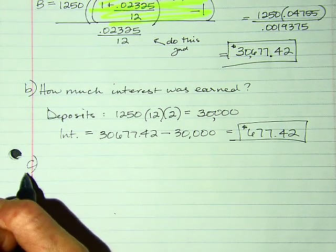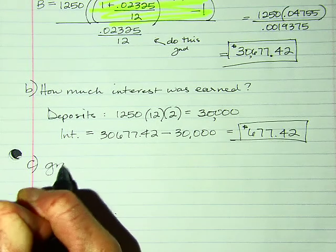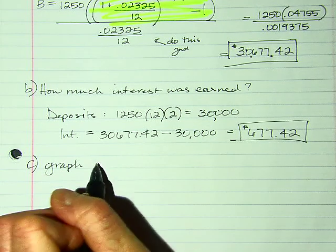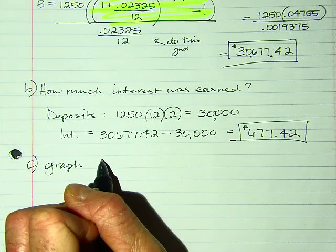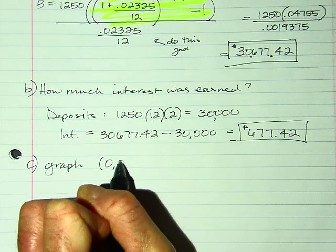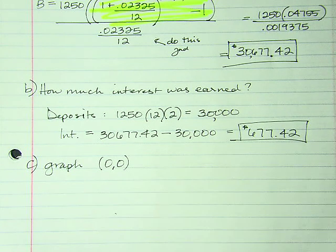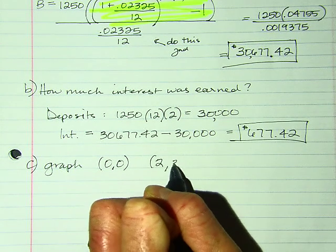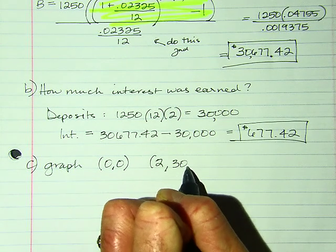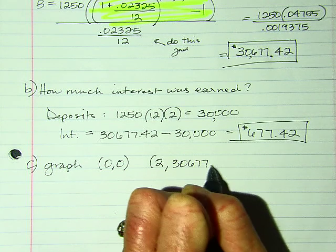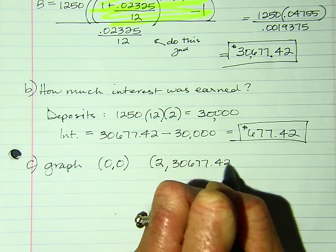Part C: they want us to graph. At the beginning of the account you always start at (0, 0), and in two years she earned $30,677.42. Those are my two points.